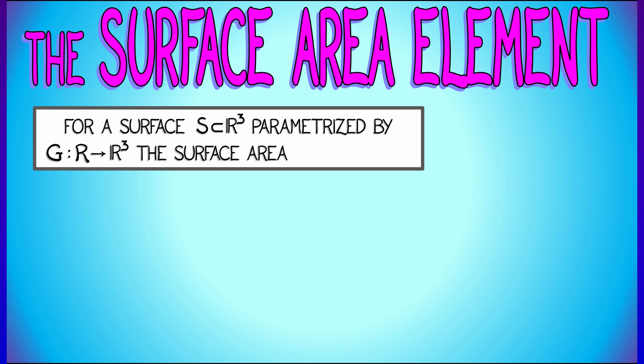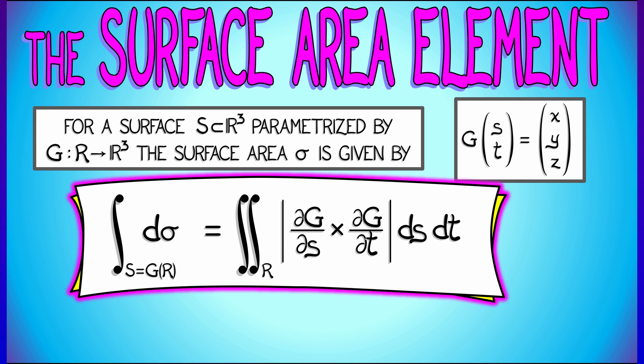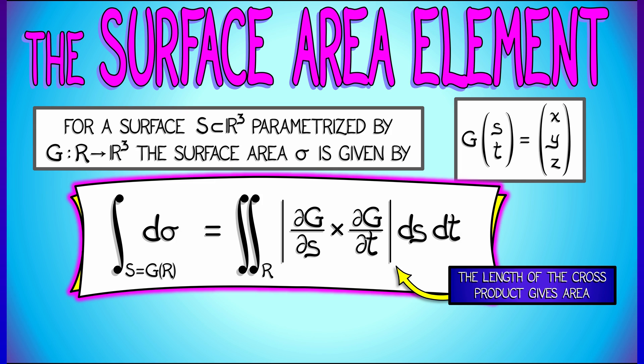The surface area element, d sigma, is equal to the length of the cross product, partial g partial s, and partial g partial t.